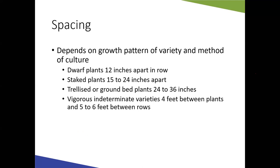Spacing is an important cultural practice — we don't want to pack tomato plants in too tightly, as that can create moisture and disease-favorable conditions. Spacing depends on growth pattern and training method. Dwarf varieties marketed for containers are typically spaced 12 inches apart; staked plants 15 to 24 inches; trellised plants 24 to 36 inches. Very vigorous indeterminate varieties may need up to 4 feet between plants and 5 to 6 feet between rows if growing as vines.